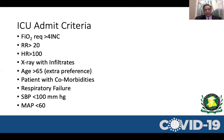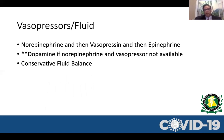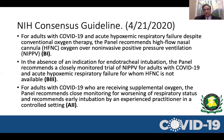Coming to COVID: ICU admission criteria are not different from standard criteria. The patient may require higher FiO2, elevated respiratory rate, elevated heart rate, low blood pressure or mean arterial pressure. Elderly patients with comorbidities, respiratory distress, or immunocompromised status should be moved to the ICU sooner. For vasopressors, norepinephrine is first choice, followed by vasopressin; if norepinephrine is unavailable, dopamine can be used. Conservative fluid balance is a key factor.